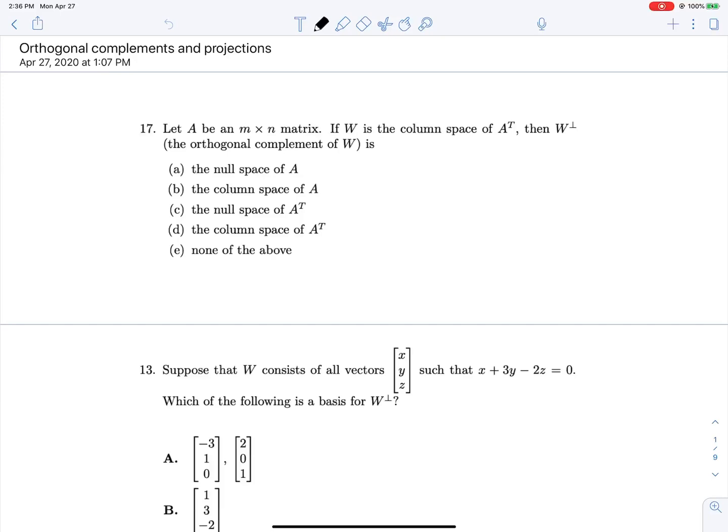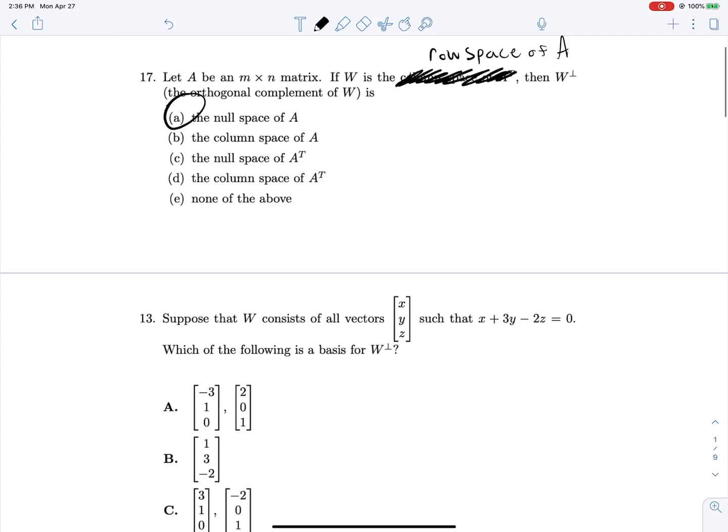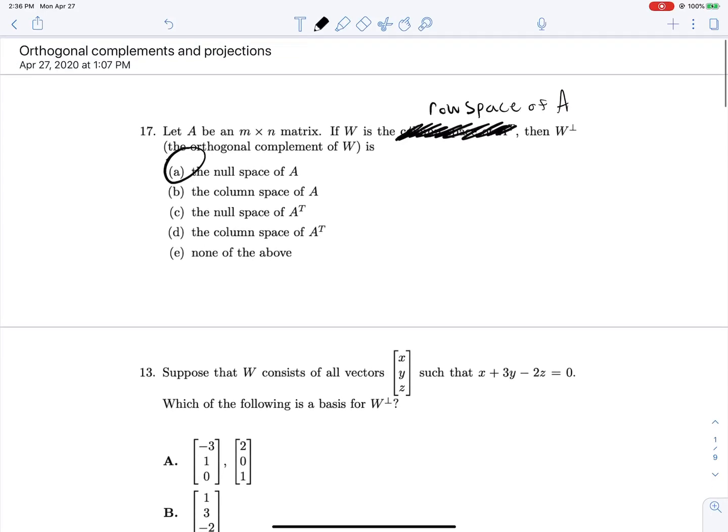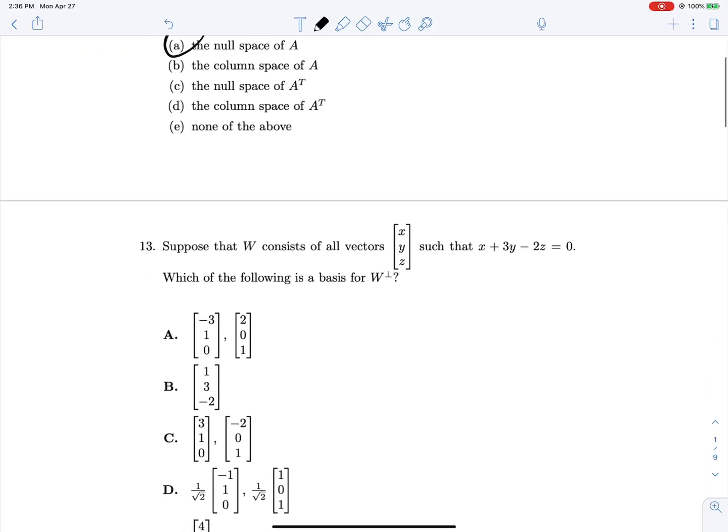Let A be an M by N matrix. If W is the column space of A transpose, let's think about the row space of A. That makes things easier because we know that the row space of A is always orthogonal to the null space of A. That's literally the question. All they're asking for is the orthogonal complement, and we know that the thing that's always orthogonal is the null space.